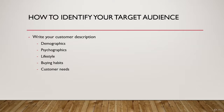To find your target audience, we can discuss five principal things to look for: demographics, psychographics, lifestyle, buying habits, and consumer needs. When writing down your target audience description, the first thing to cover is demographics, which includes age, gender, profession, income level, and marital status.